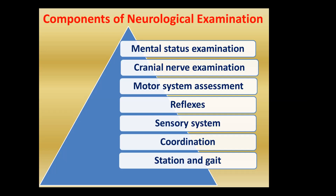Reflexes are of two types: superficial and deep. Reflexes involve the afferent pathway, going from the periphery toward the center, so sensory system and reflexes are both afferent. Coordination means that what we are thinking and what we are doing must be equal. Any mismatch between intention and action indicates abnormality.